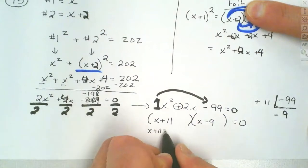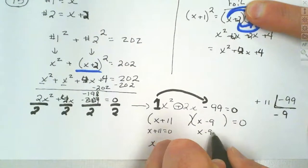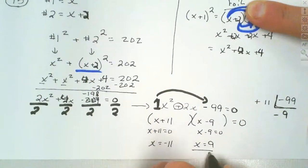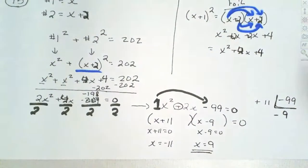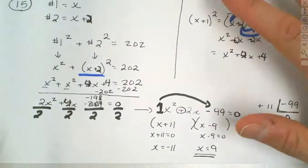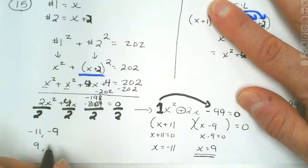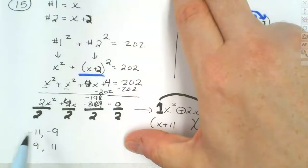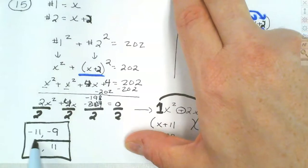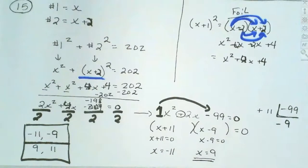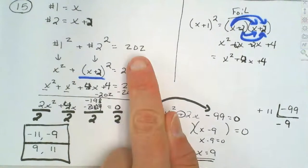Setting each to zero: x plus 11 equals 0 gives x equals negative 11; x minus 9 equals 0 gives x equals positive 9. We're going to get two sets of numbers. If I start with negative 11 and add 2, I get negative 9. If I use 9 and add 2, I get positive 11. So our two sets are {-11, -9} and {9, 11}.